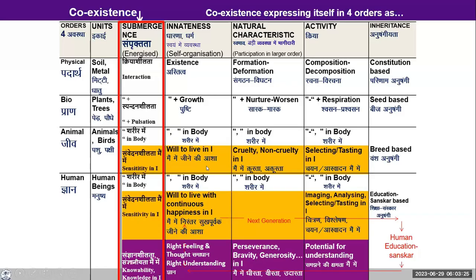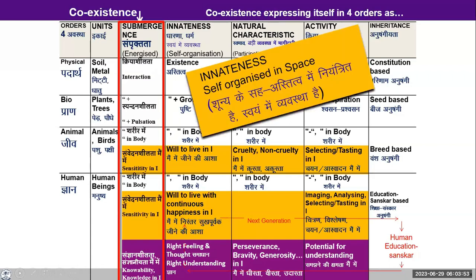This is just a chart of the coexistence expressing itself in the four orders. The coexistence or the submergence — when we see that, we see all the units, they are submerged in space. This we can see from the point of realization. So only when we awaken to the activity of realization, when we are able to see the subtle reality — the space — only then can we see units submerged in space.